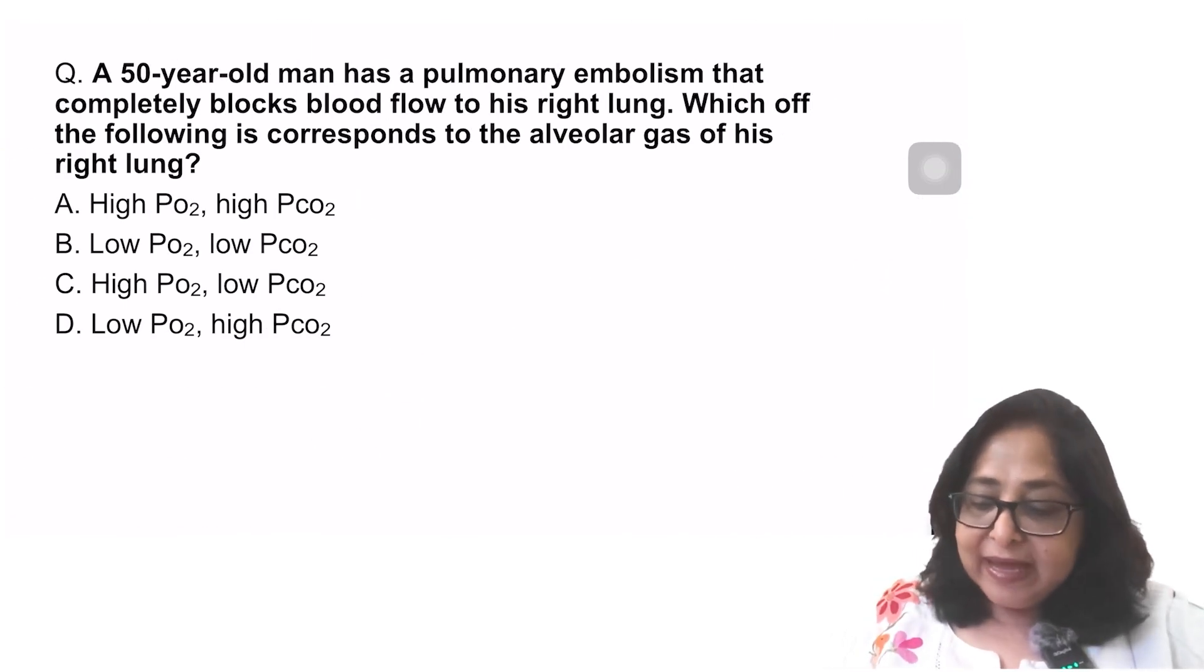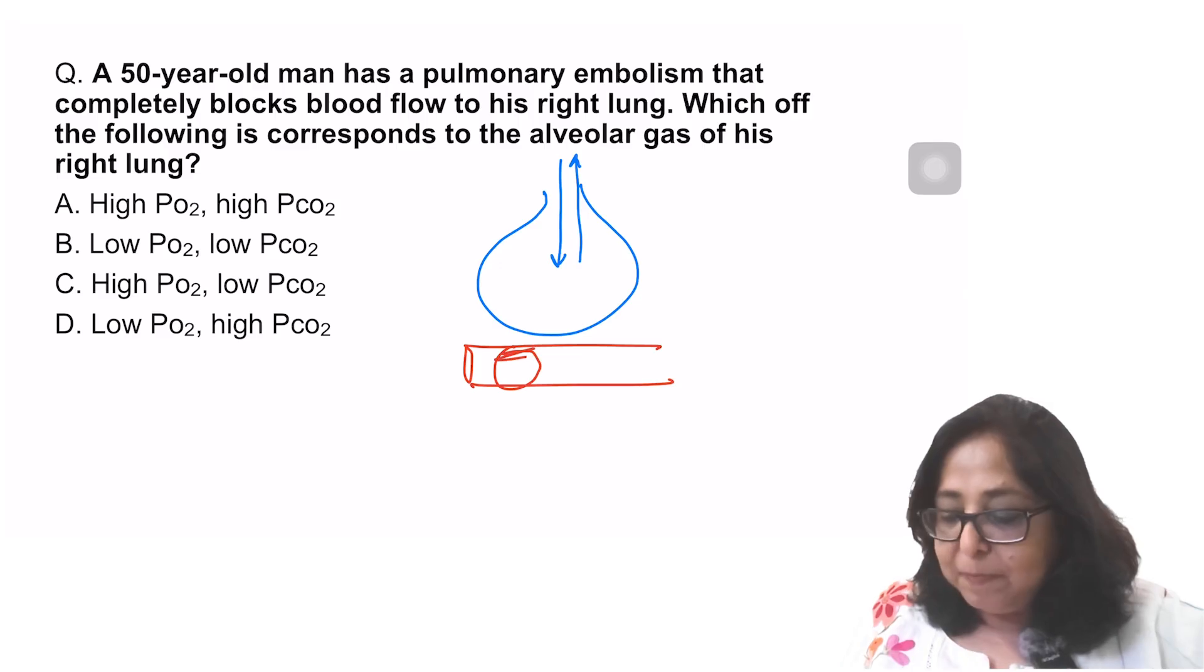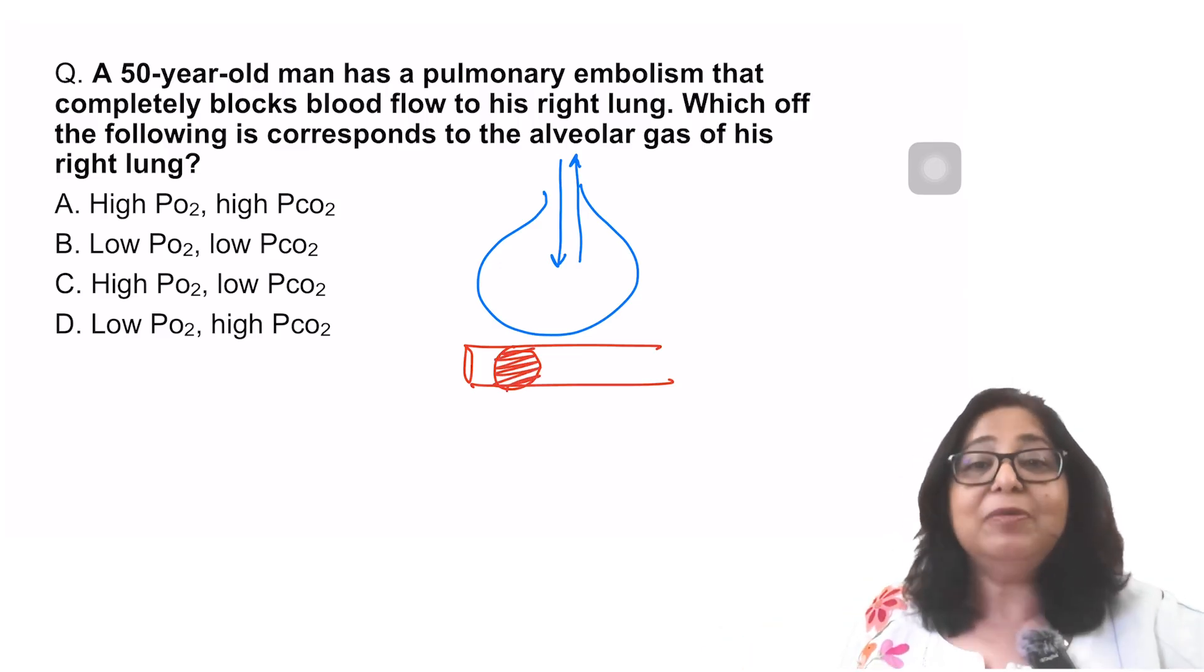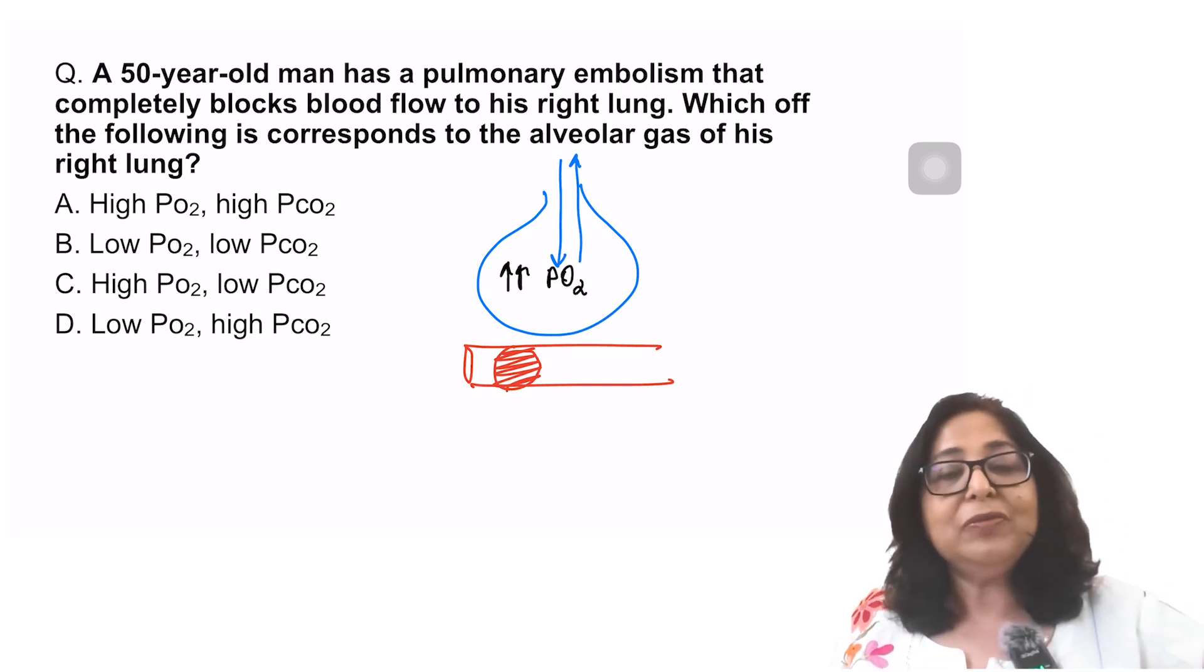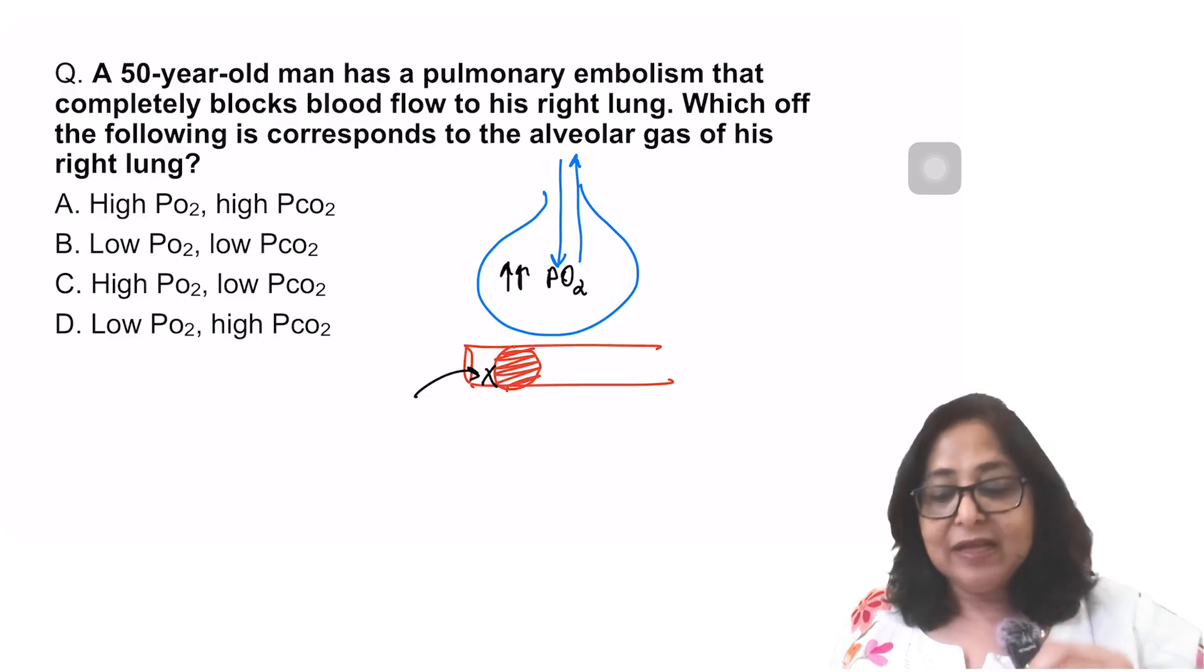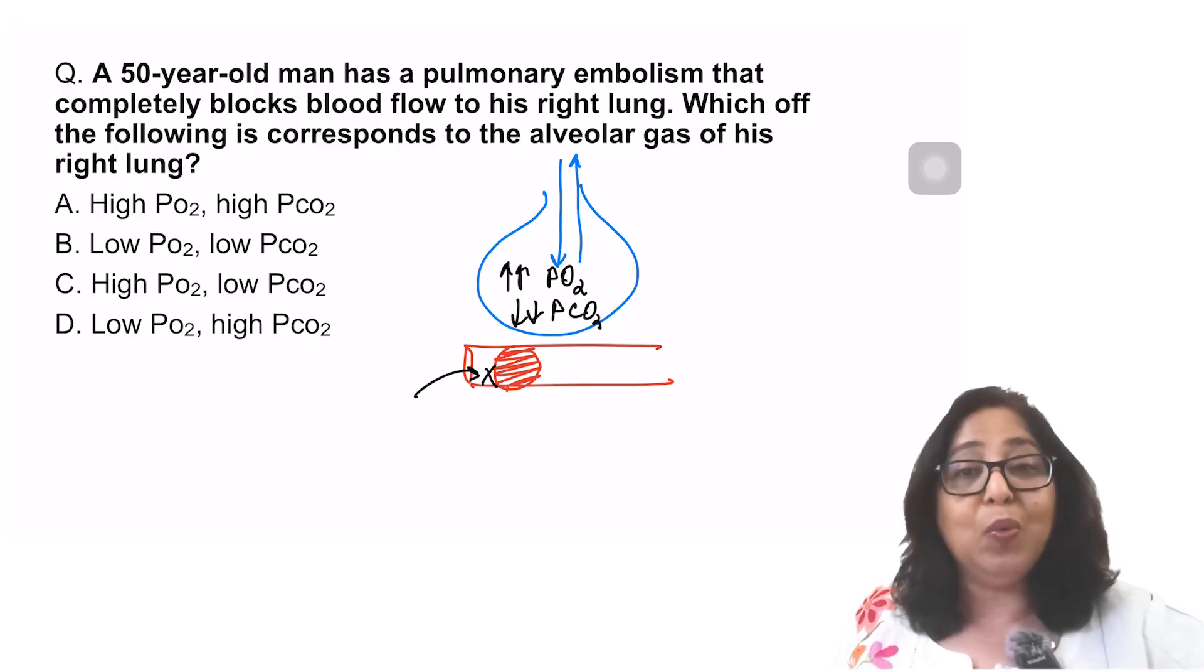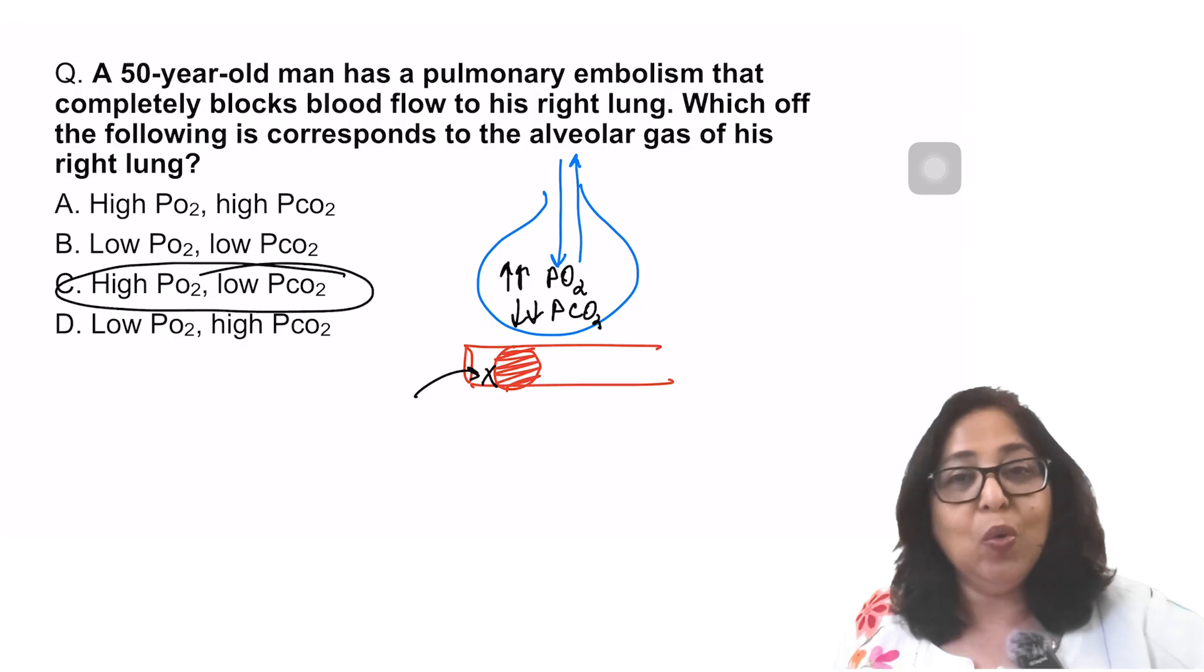Next question. A 50-year-old man has a pulmonary embolism that completely blocks the flow to his right lung. If I'm blocking the flow to the right lung, ventilation is normal, but the perfusion to the right lung is blocked. There is no blood flow. If there is no blood flow, there will be a very high PO2 in the alveolus. And what about the CO2? The source of CO2 in the alveolus is from the blood. If there is no blood flow, the CO2 will be very, very low. So my answer to this question is a high PO2 and a low PCO2.